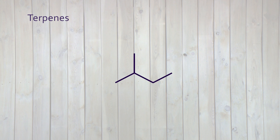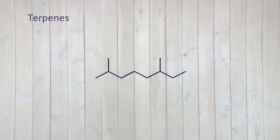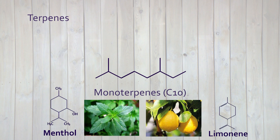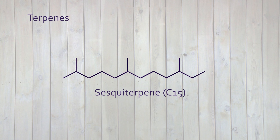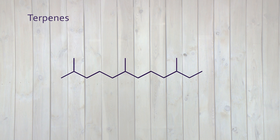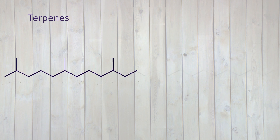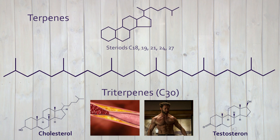Attaching two hemiterpenes together will form a monoterpene of 10 carbons, such as menthol and limonene. Adding another hemiterpene will form a sesquiterpene of 15 carbon atoms. Coupling two of these sesquiterpenes together forms the backbone of steroids such as cholesterol and testosterone.